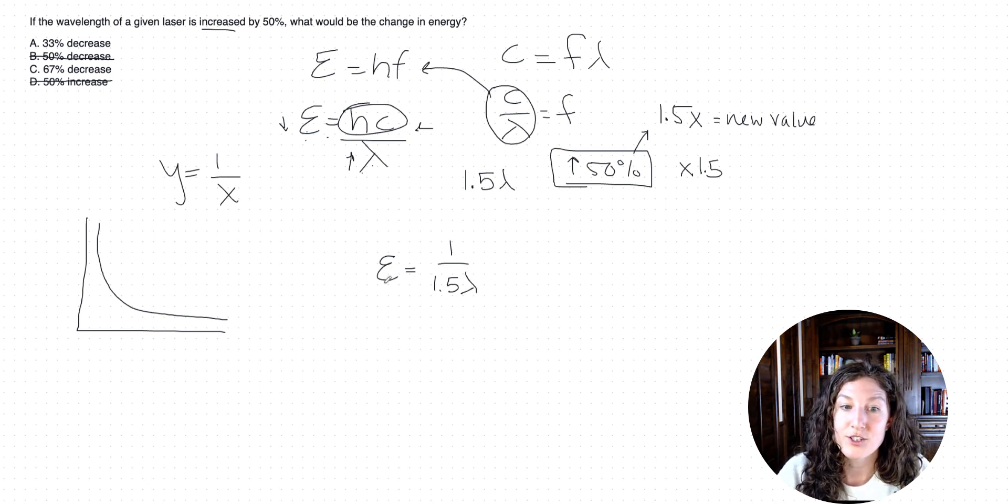All right, so how do we resolve this to solve for energy? Well, we have to do our reciprocal math. So we have to do 1 over 1.5. So what is 1 over 1.5? That's kind of tricky. So I'm going to turn 1.5 into a fraction. So I'm going to go 1 over 3 halves, because 1.5 is the same as saying 3 halves. This is 1 over 1. And when you're dividing by fractions, what you can also do is flip it up and multiply by the reciprocal. So now we just have 2 thirds.